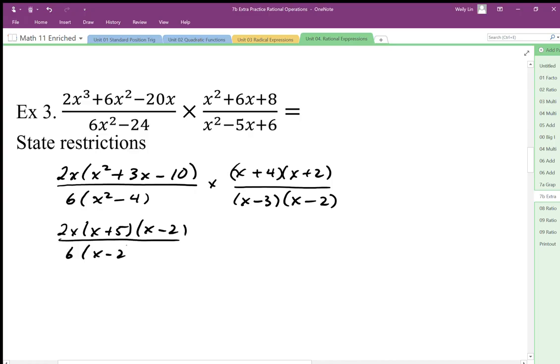x minus 2, x minus 2. Really this is just one big fraction. Everything on this is just times - times on top, divide on bottom. We're just combining that anyway, so I'm going to write this as one big fraction now.